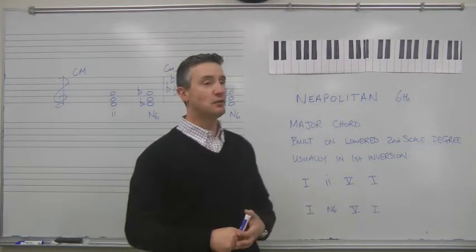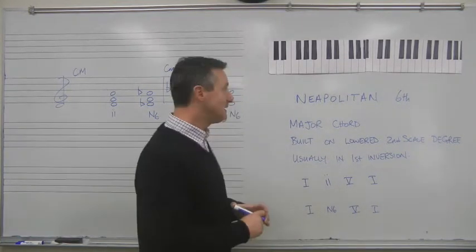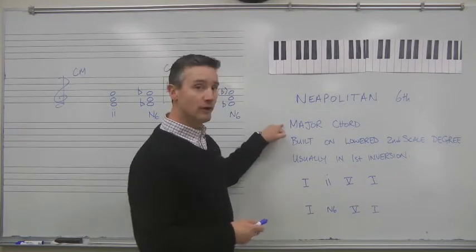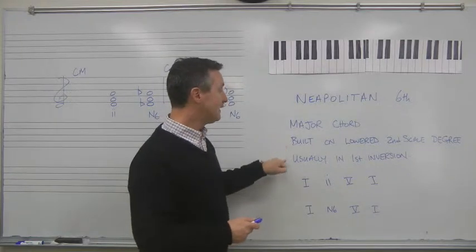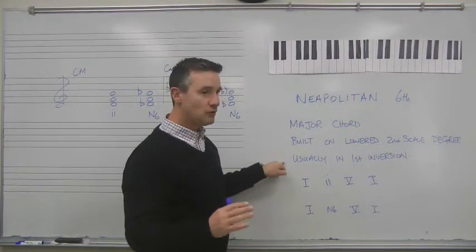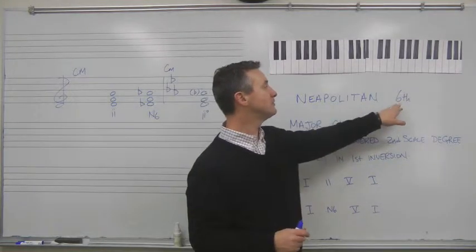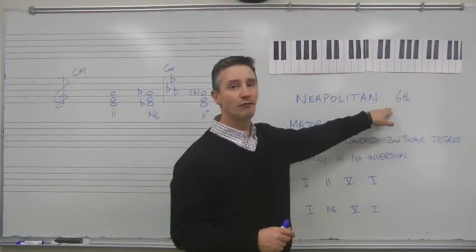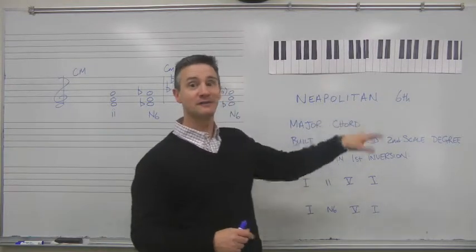So the Neapolitan VI, what is it? Well it's actually very simple to define. The Neapolitan VI is a major chord and it is built on the lowered second scale degree. And it is usually, although not exclusively, usually in first inversion. That's why it's called the Neapolitan VI, the VI here referring to the figured bass for first inversion, Neapolitan VI chord.